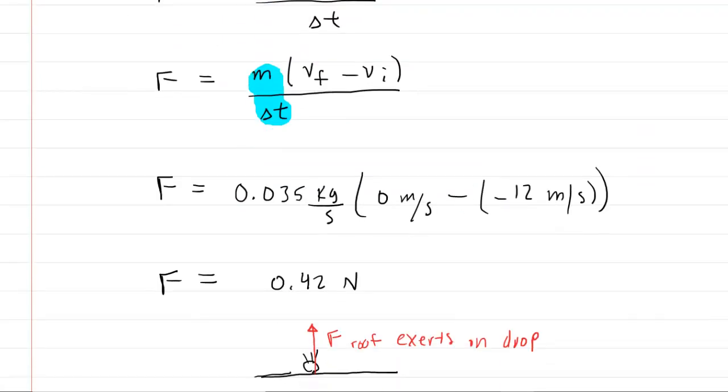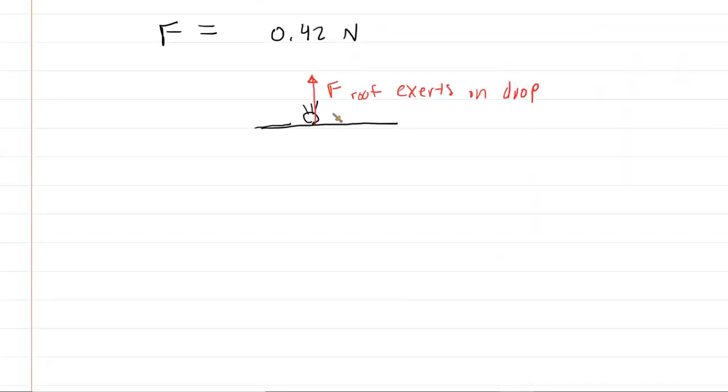Now, of course, we all remember Newton's third law, which says that if the roof exerts an upward force on the drop, then the rain will exert a downward force on the roof. So the answer here is that the rain exerts a downward force on the roof.